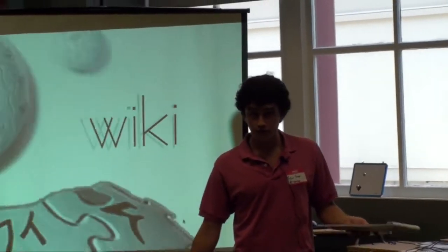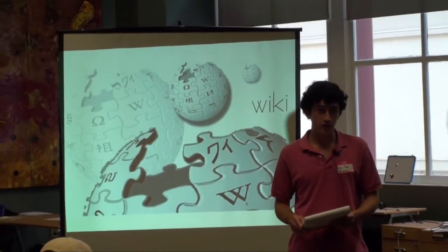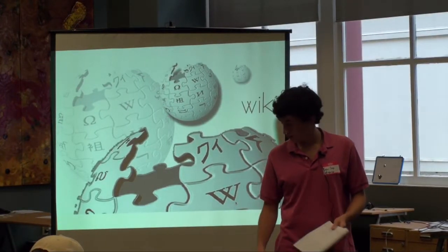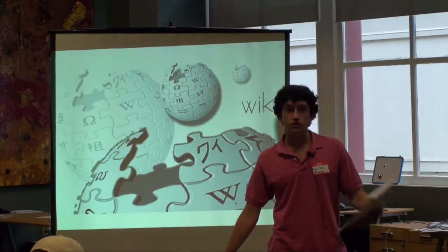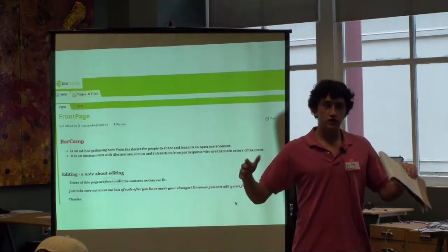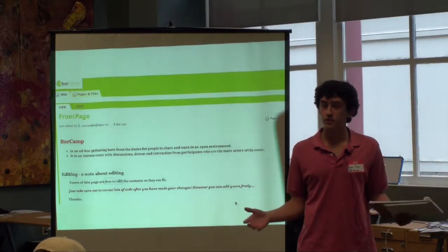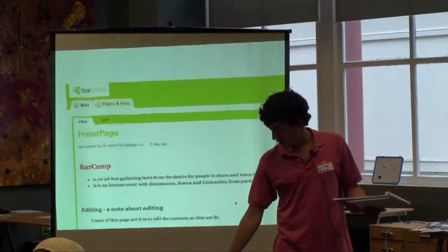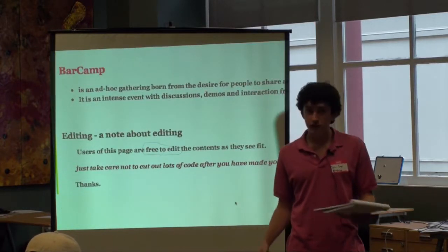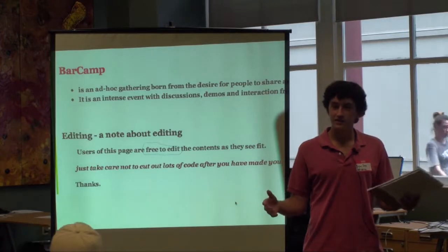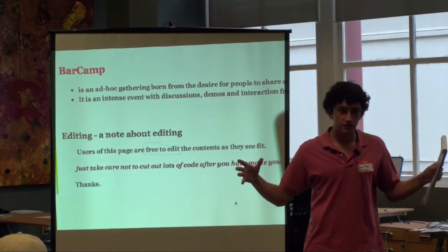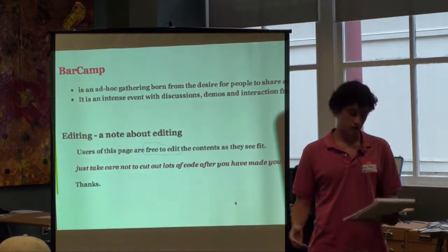Now, of course, when you say wiki, the first thing we all think of is Wikipedia, but it's important to realize that a wiki goes really far beyond this. Take the BarCamp website, for example. This organization on a national level is organized by a wiki. You'll see there, I tried to circle, anyone is allowed to come in and edit this. It's not controlled by any one individual. It's really a collaboration of all the minds that are interested in this.